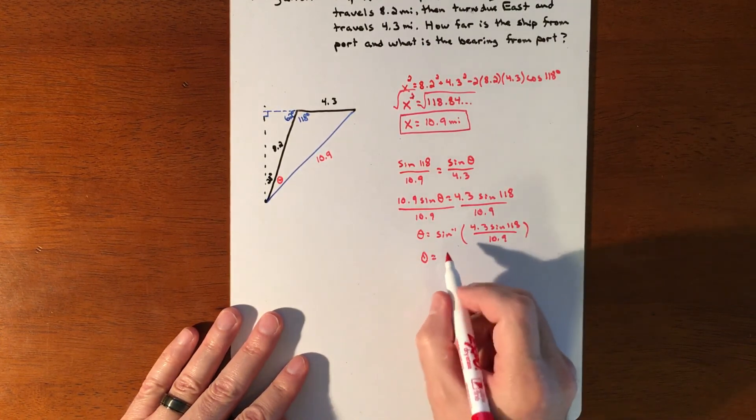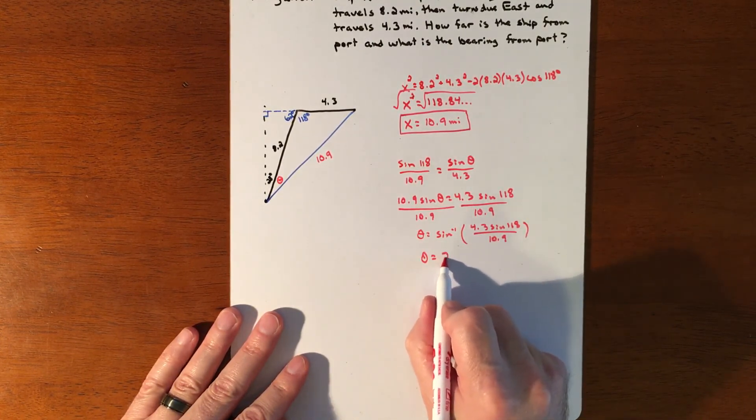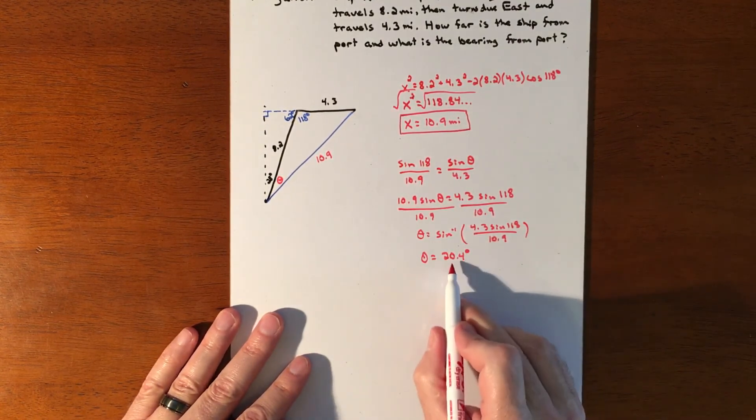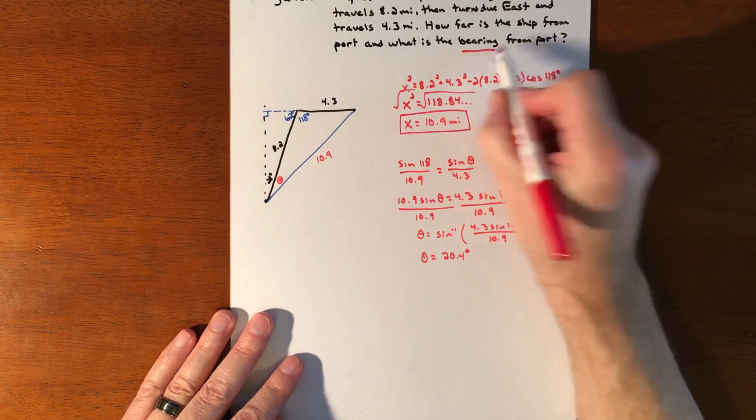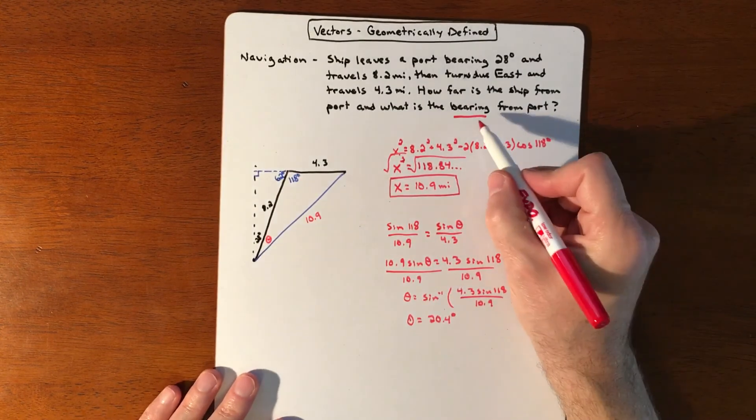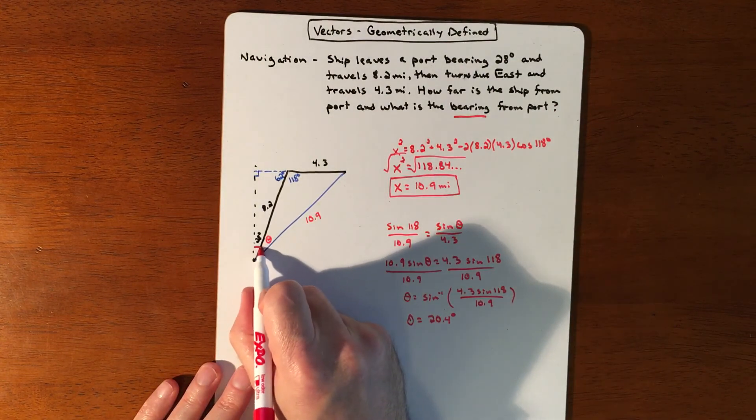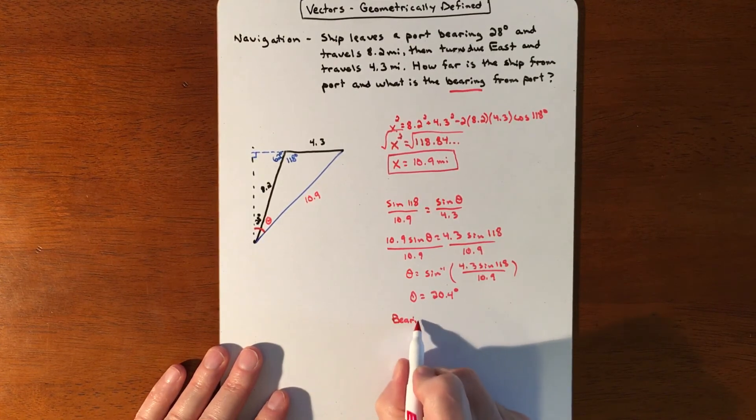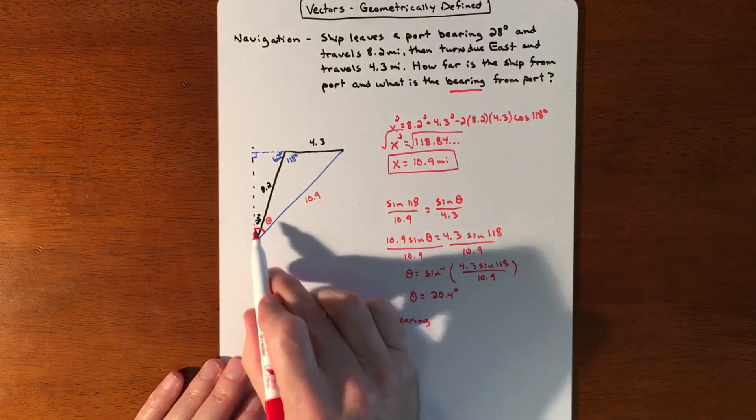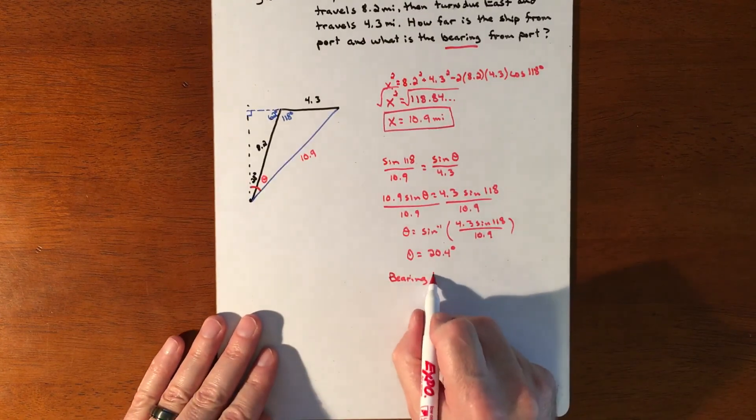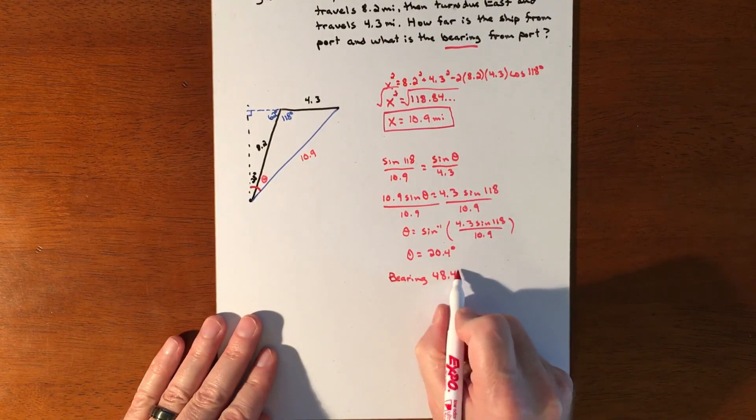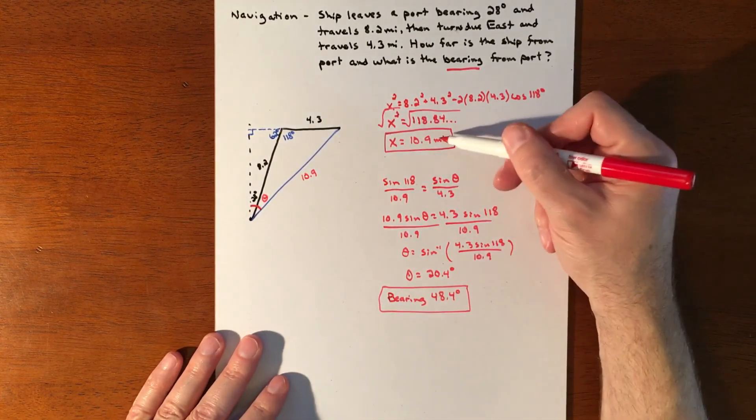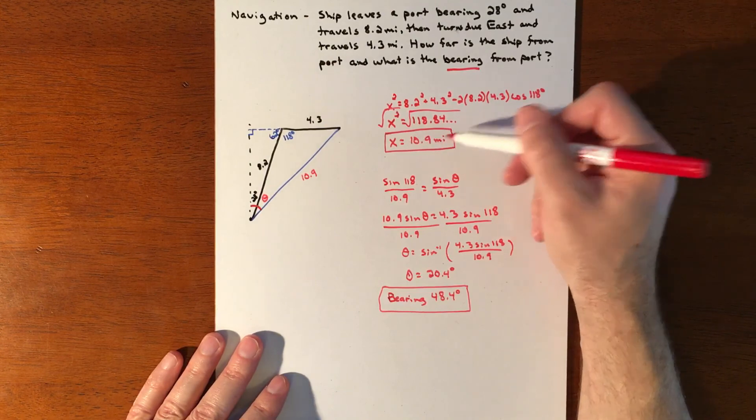And so theta is roughly 20.4 degrees when you plug that into the calculator, but that's not the actual angle because we're looking for bearing and bearing is going to be from the north. So we want this whole angle right here. So our bearing is going to be these two angles added together. So it's actually going to be 48.4 degrees. Our bearing is 48.4 degrees and our distance away from there is 10.9.